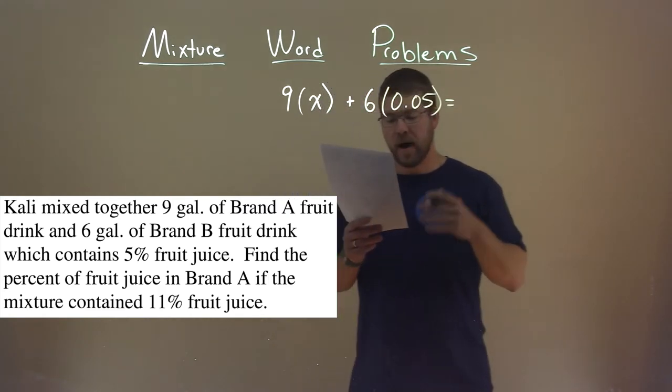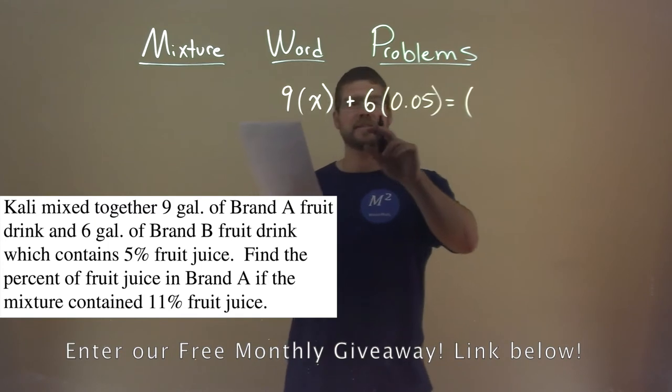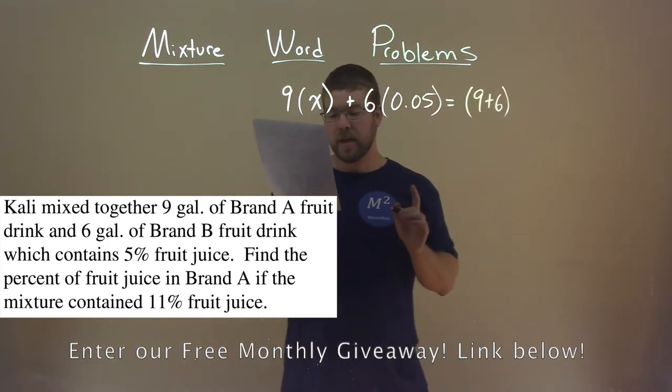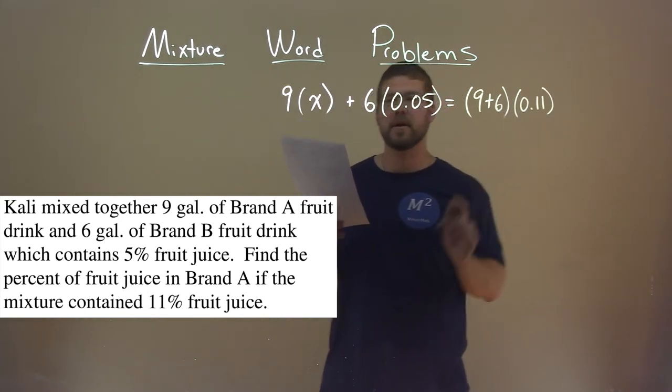Together, that made a final mixture. Well, what's the volume of the final mixture? We add the 9 and 6 gallons. But the percent of that fruit juice in the final mixture was 11%, so 0.11 here.